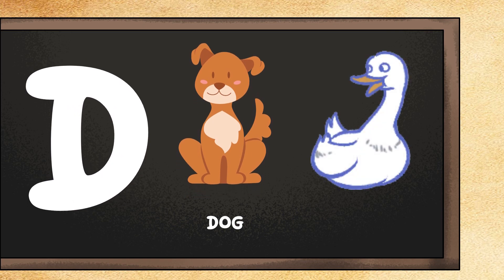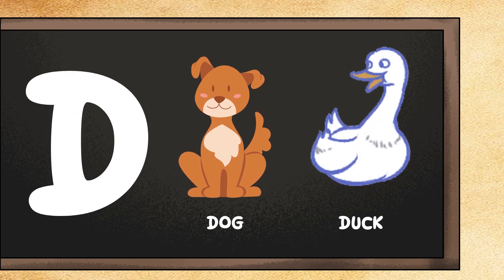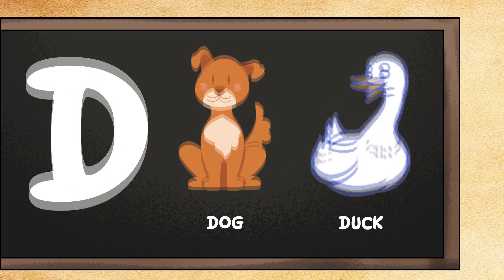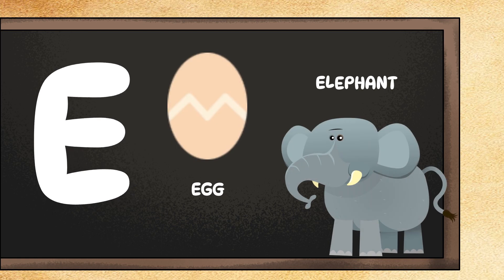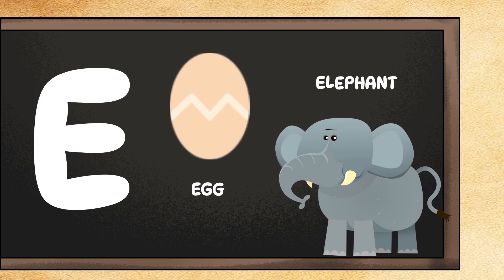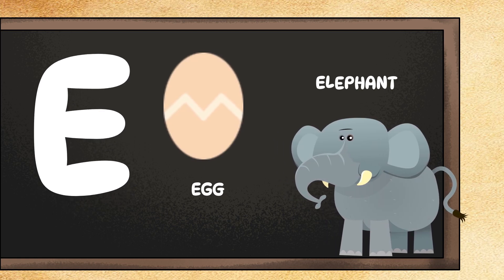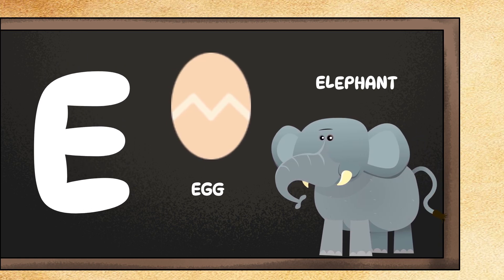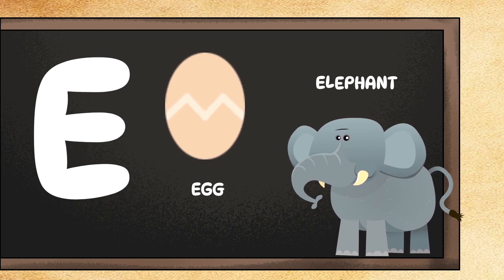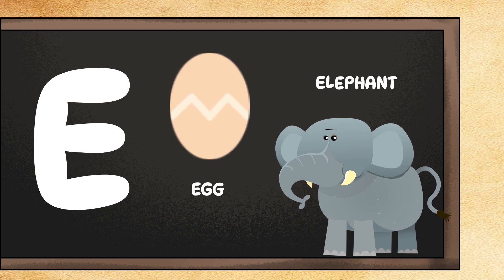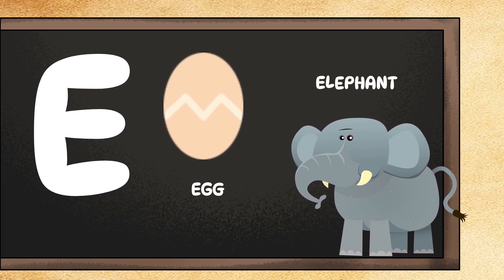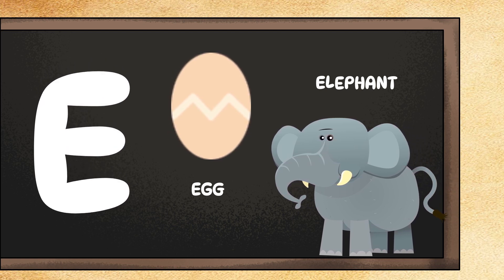D is also for duck. Can you quack like a duck? Quack quack! E is for elephant. Can you make a big elephant sound? Trumpet! E is also for egg. Can you pretend to crack an egg? Crack!